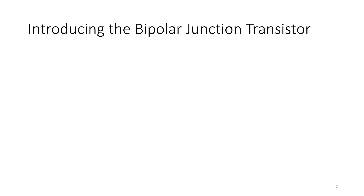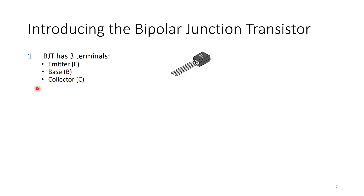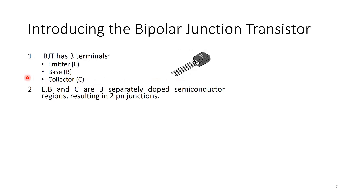Introducing the Bipolar Junction Transistor: a BJT has three terminals — emitter, base and collector. In hardware labs it typically comes in this kind of packaging labeled EBC. The emitter, base and collector are three separately doped semiconductor regions resulting in two PN junctions — one between emitter and base, and another between base and collector. Voltages can be applied to these regions through the terminals.